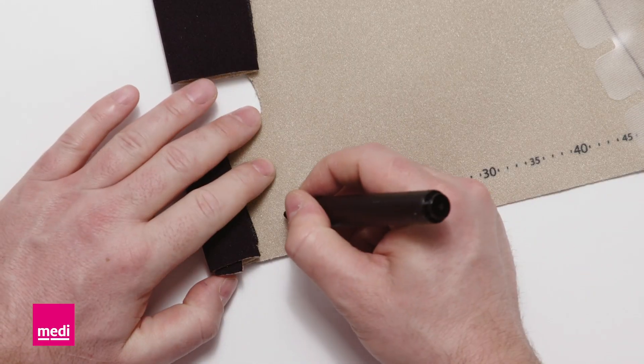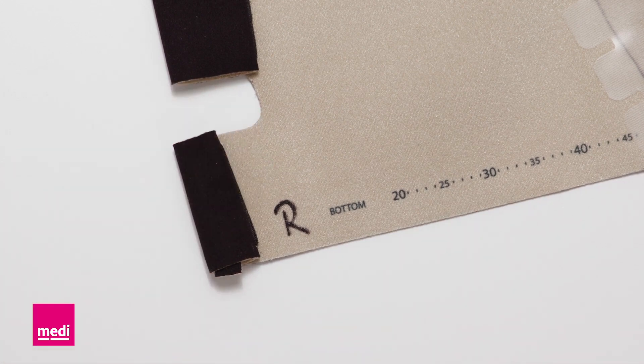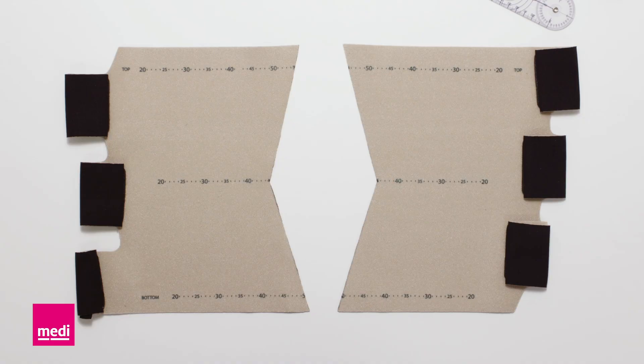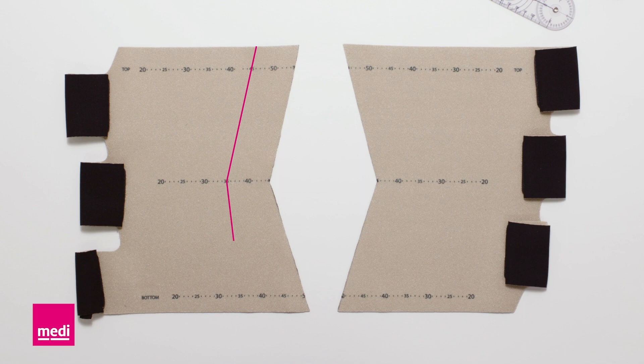Label the garment for the right or left leg accordingly. As soon as the leg has decreased significantly in circumference, trim the garment to the new measurements and remove the excess material.